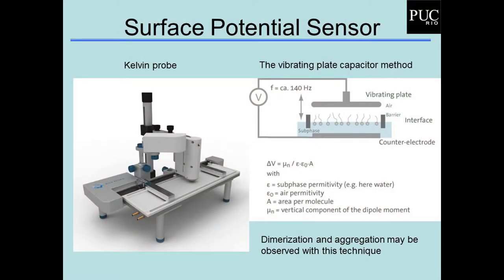O sensor de potencial de superfície é muito interessante porque você consegue ver formação de agregados que ocorrem dentro do filme. O potencial de superfície é muito dependente da formação de agregados; então você pode ver, por exemplo, dimerização e agregação por essa técnica. Nada mais é do que um capacitor plano que fica vibrando, e aqui embaixo na subfase você coloca um eletrodo e consegue sentir o potencial de superfície no filme de maneira bastante precisa.